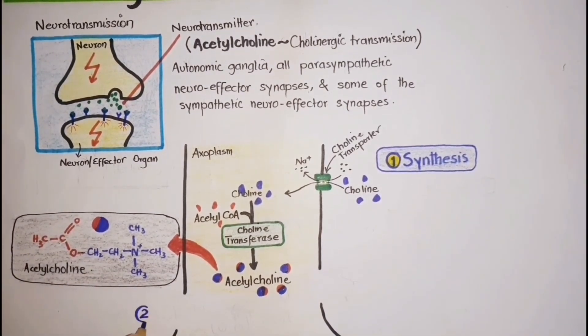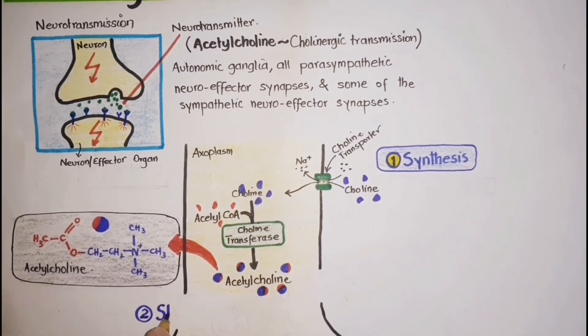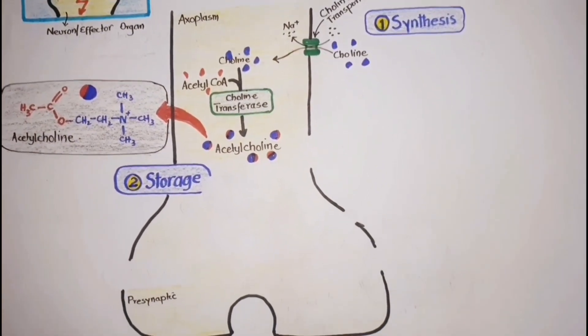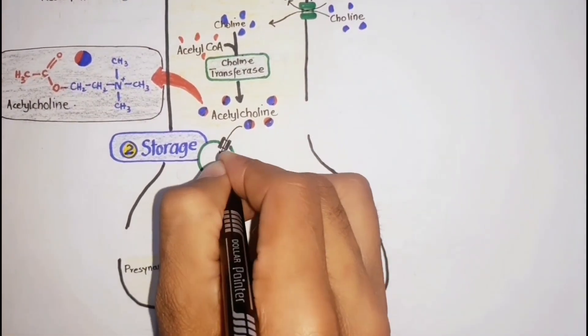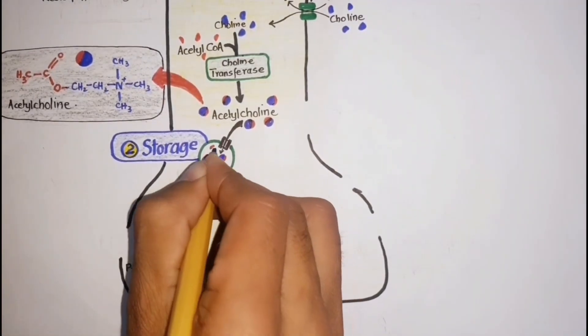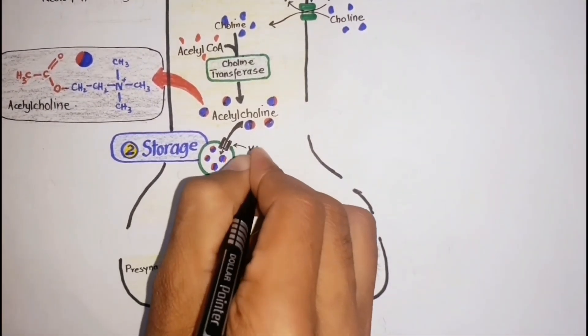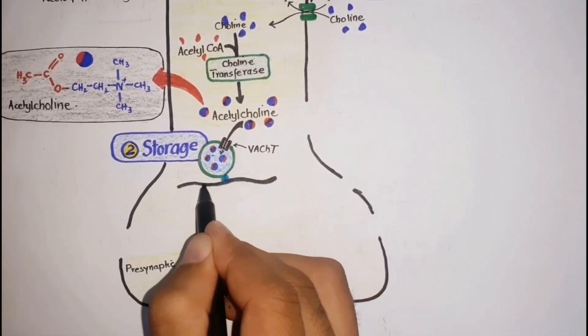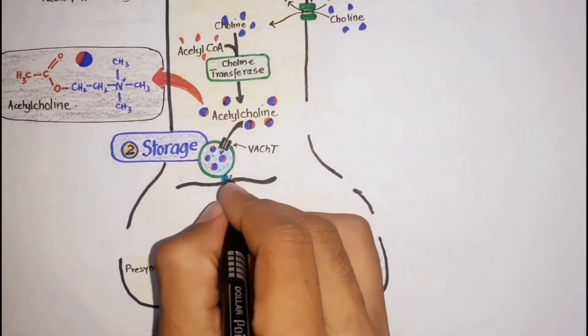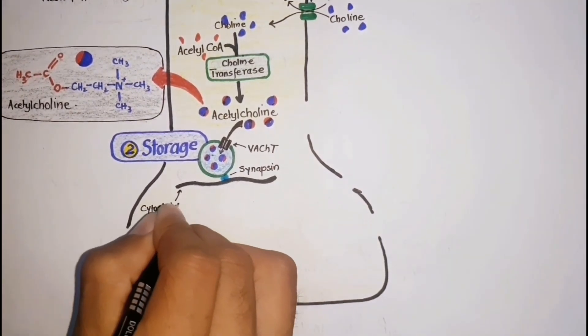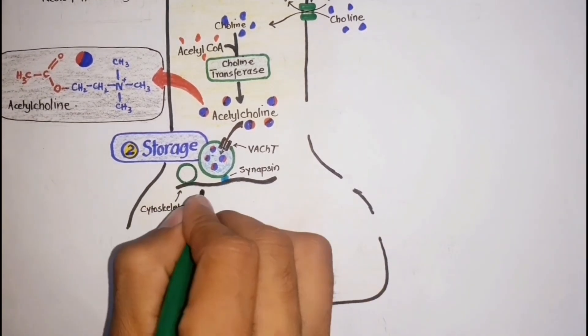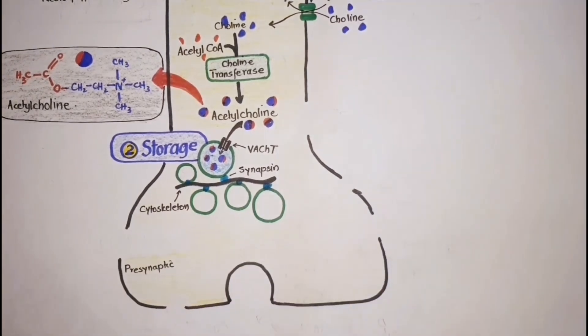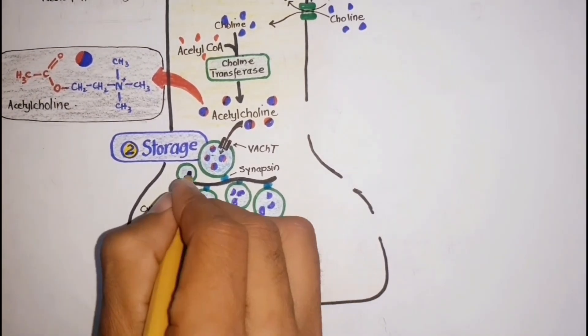The second step in cholinergic transmission is the storage of acetylcholine in vesicles. After synthesis, acetylcholine is transported into synaptic vesicles by the vesicular acetylcholine transporter. The vesicles are attached via the protein synapsin to the cytoskeleton network. This arrangement helps in bunching of vesicles near the presynaptic membrane while preventing their fusion with it.